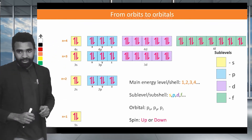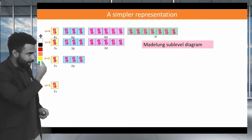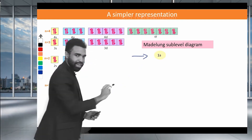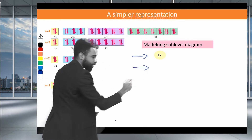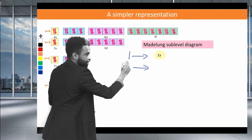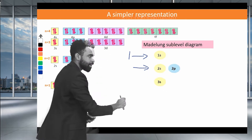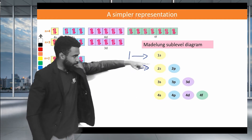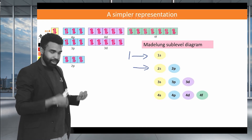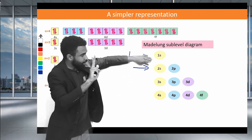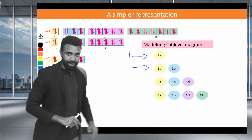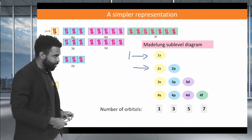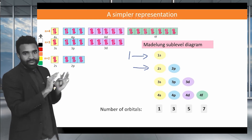We can represent this in a slightly different way called the Madelung sublevel diagram. On each row we put the sublevels within each main level: row 1 has 1S; row 2 has 2S and 2P; row 3 has 3S, 3P, 3D; row 4 has 4S, 4P, 4D, 4F. Below the diagram you can note the number of orbitals per sublevel type: 1, 3, 5, 7. If you can get this picture into your head, you can answer every question in this section of the syllabus.